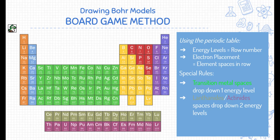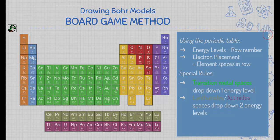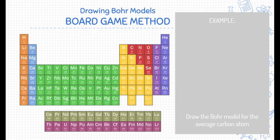If this doesn't quite make sense, bear with me. We'll go through an example and it will start to make more sense. Now there are a few special rules, namely transition metals and lanthanides and actinides. The transition metals, these green ones here you see, when we get to them, their electrons drop one energy level. And the lanthanides and actinides drop two energy levels. Let's go through an example to help clarify.